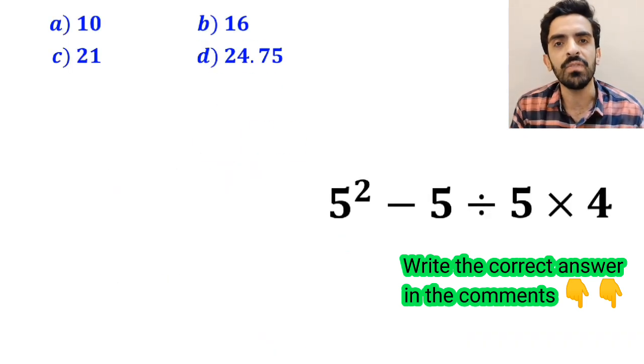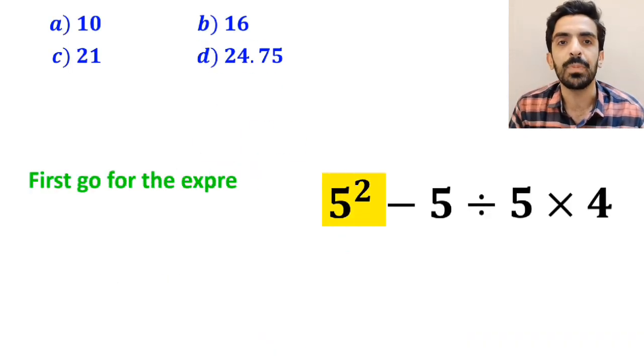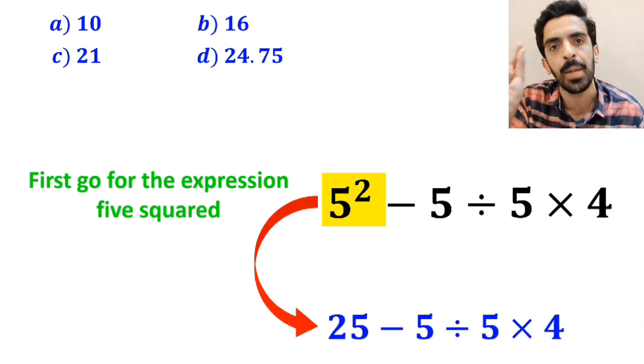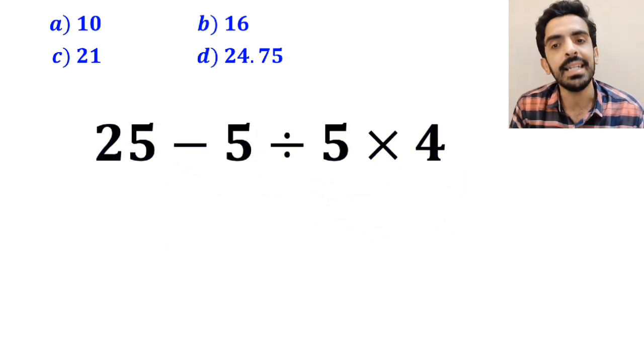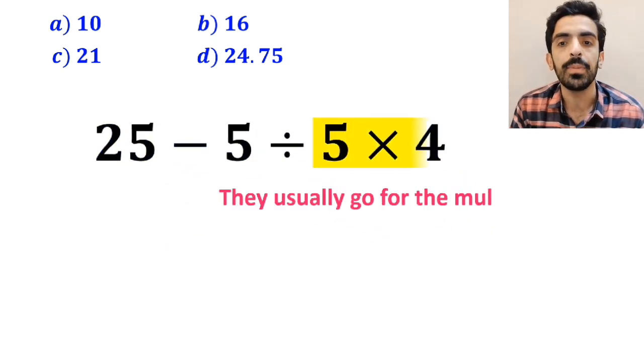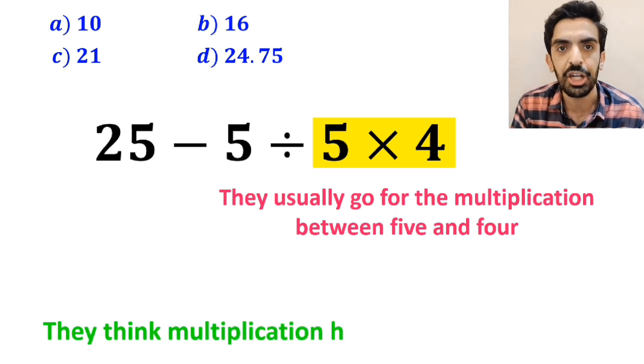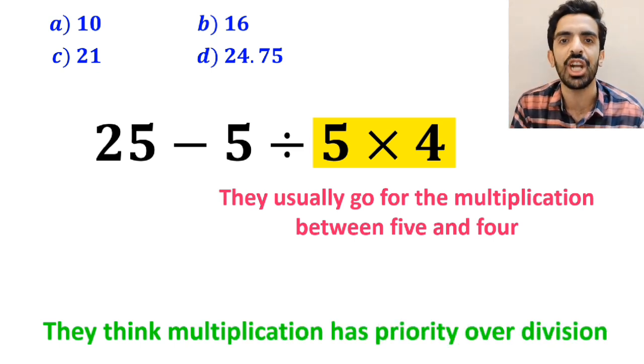Also some other people to solve this problem first go for the expression 5 squared and they simplify it to 25 minus 5 divided by 5 then multiply by 4. In the next step they usually go for the multiplication between 5 and 4 because they think multiplication has priority over division.